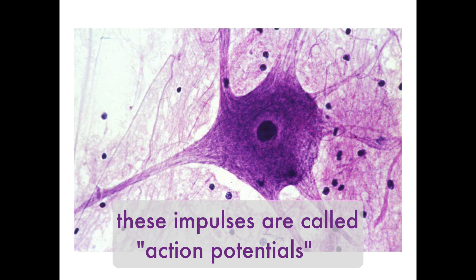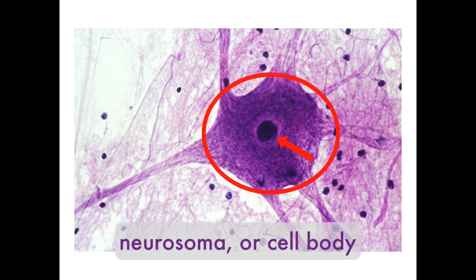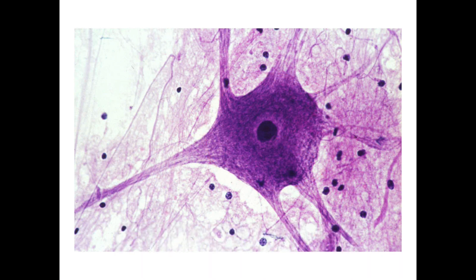We're taking a look now at the neurosoma — this is the cell body, which houses the nucleus and other organelles. This is the center for genetic information, genetic control, and protein synthesis. Neurosomas are normally round, ovoid, or a stellate shape.